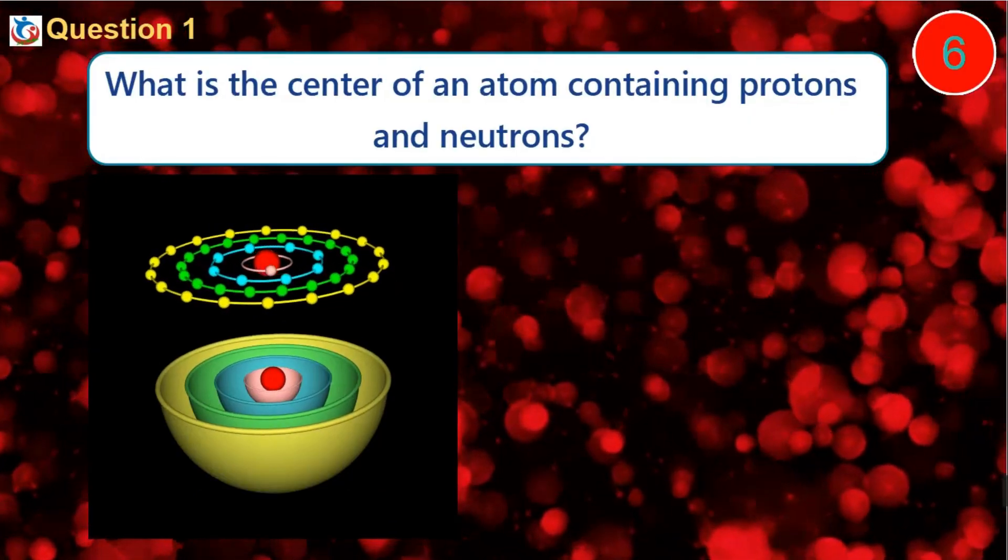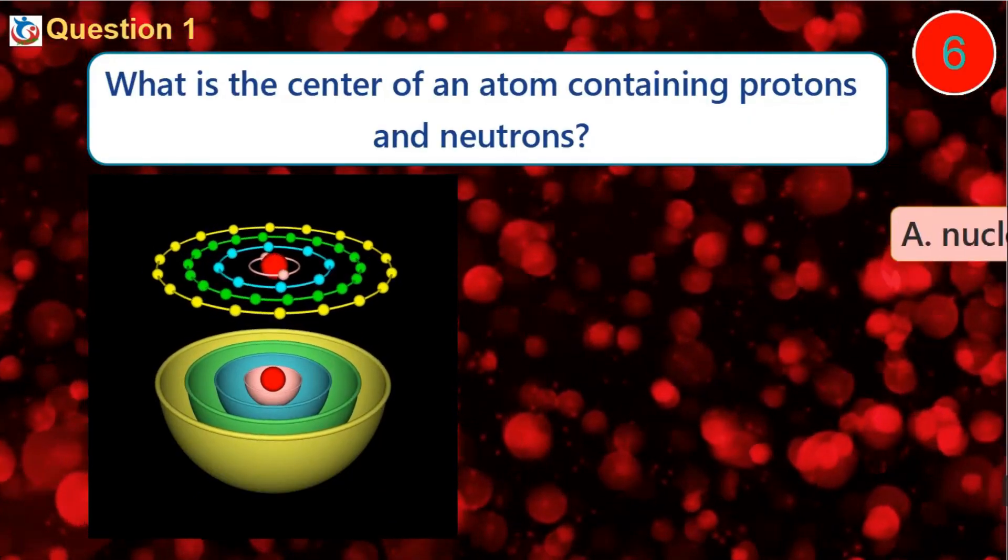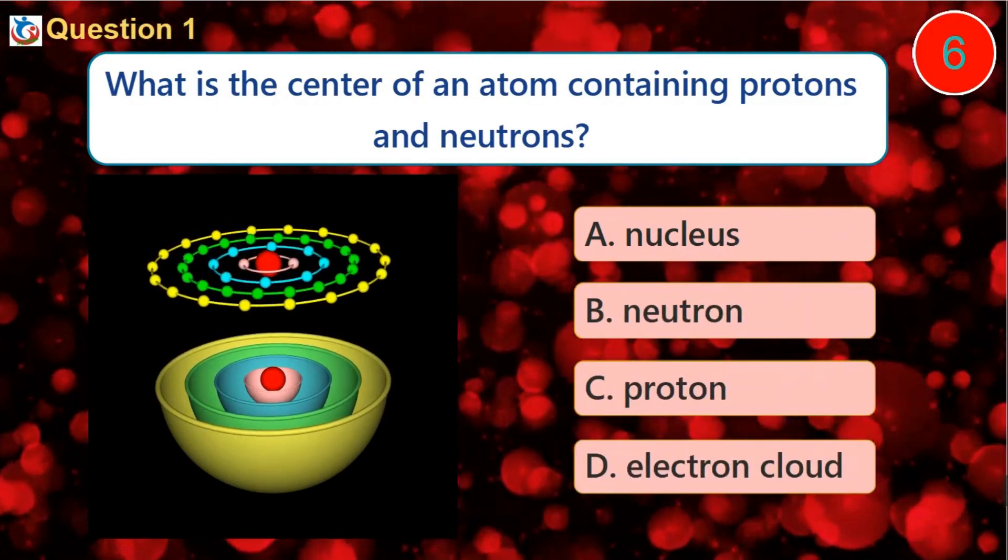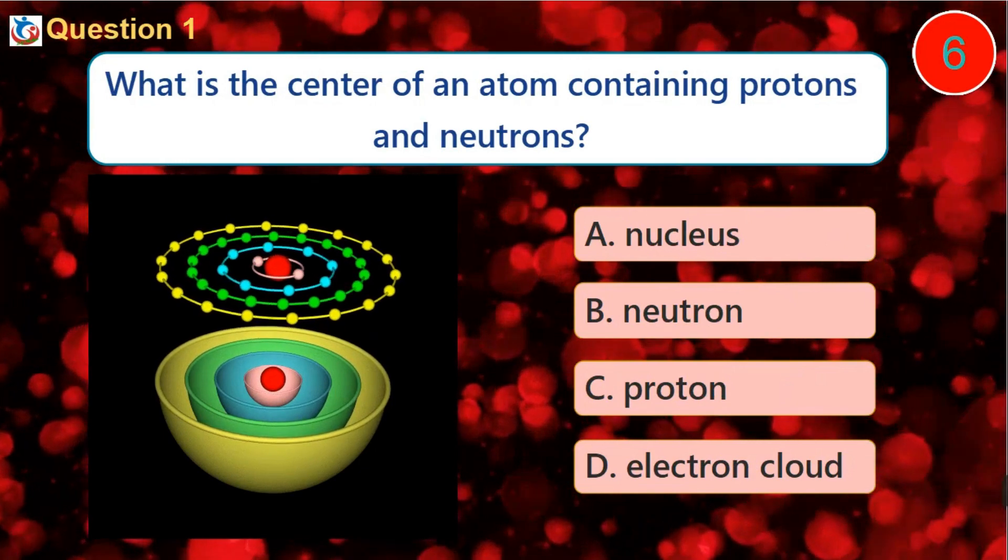Question 1. What is the center of an atom containing protons and neutrons? A. Nucleus B. Neutron C. Proton D. Electron Cloud